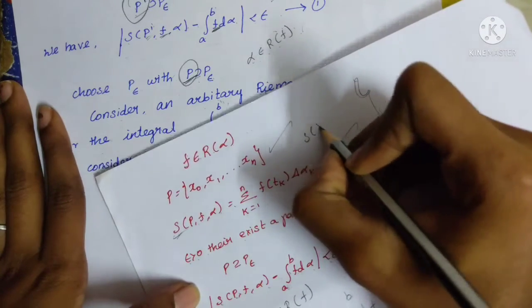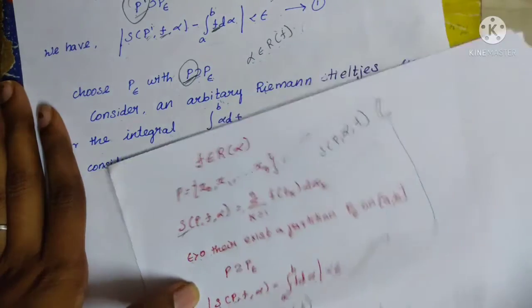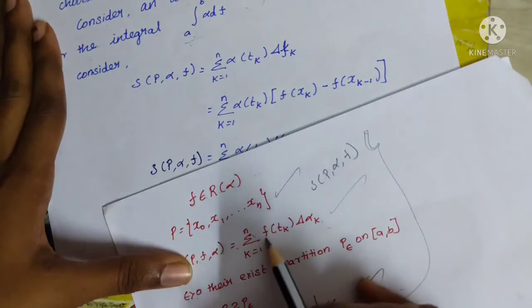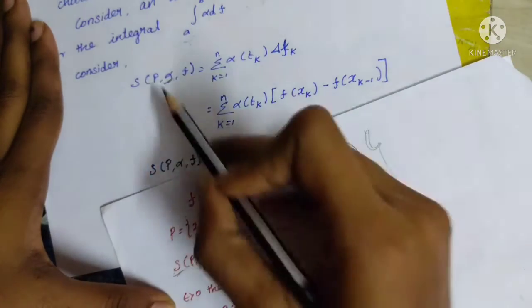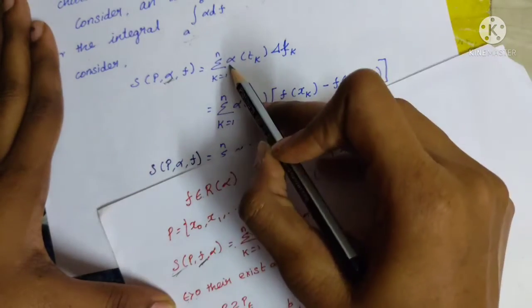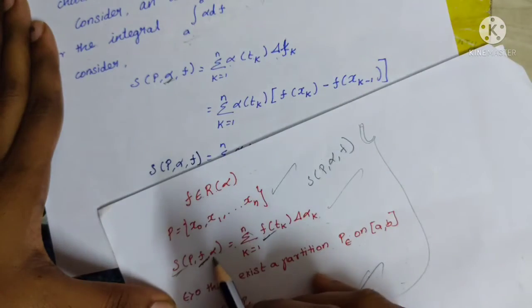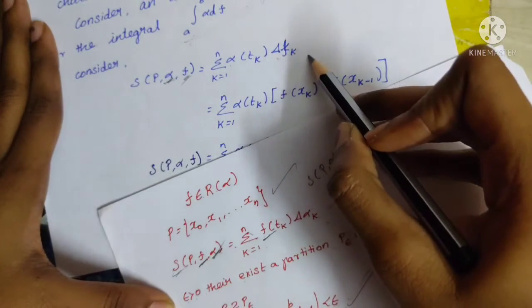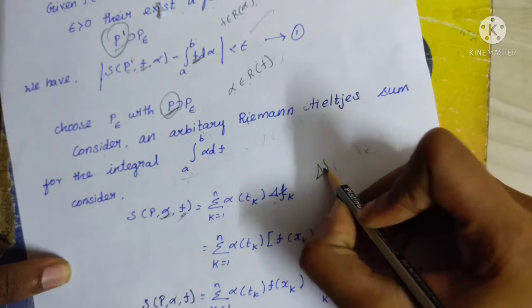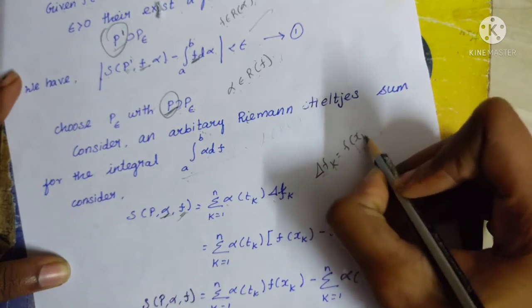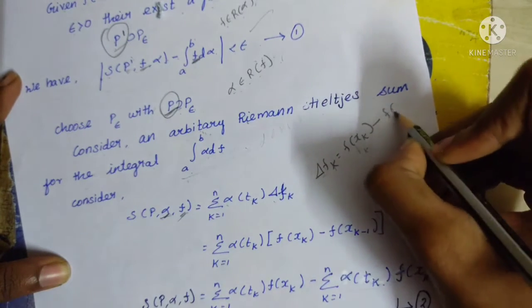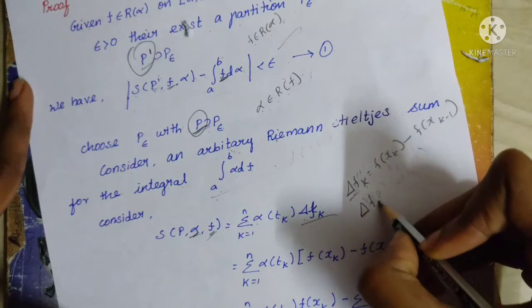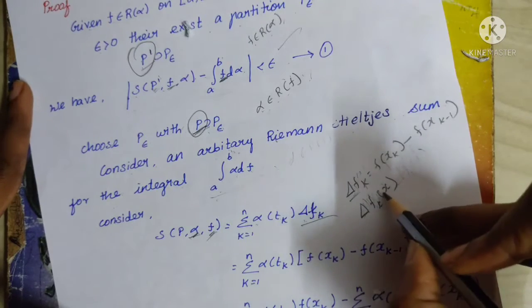So S(P, alpha, f) equals the summation from k=1 to n of alpha(t_k) times delta(f_k). Here, delta(f_k) is defined as f(x_k) minus f(x_{k-1}).